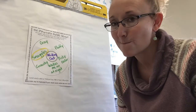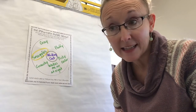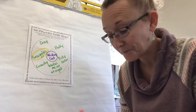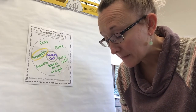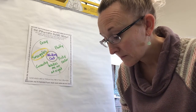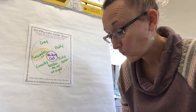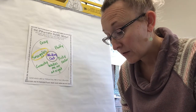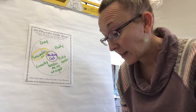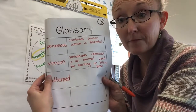Venom. I think venom is a poisonous substance that animals have to harm or kill their prey. So I'm going to say: poisonous chemical in an animal used for hurting or killing prey.